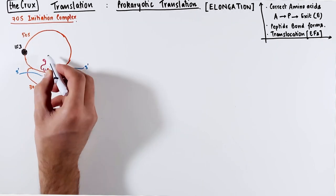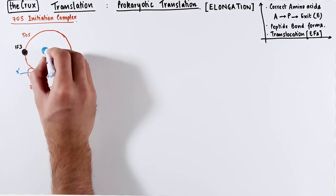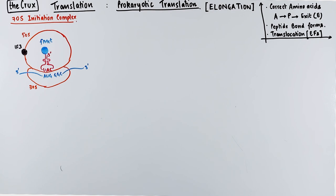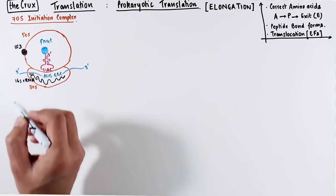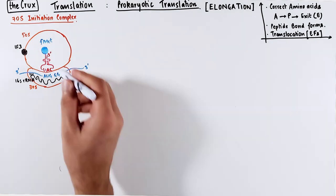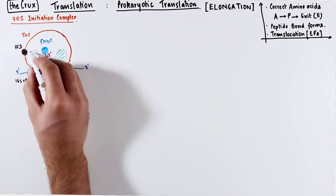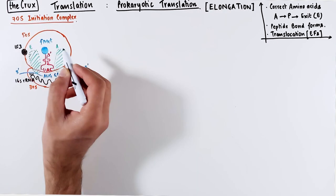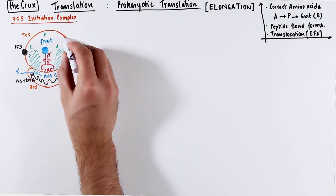The AUG codon, which is the start codon, is bound by this special initiator tRNA, which contains the formyl methionine. We also notice that in the initiation, the 16S ribosomal RNA, which is part of the 30S subunit, pairs with the Shine-Dalgarno sequence on the mRNA, just around 10 nucleotides upstream of the start codon. The A site and E sites are empty, while the P site is occupied by this initiator tRNA.